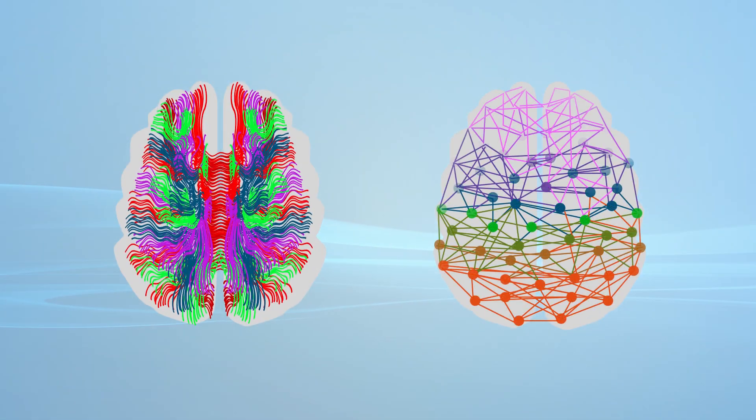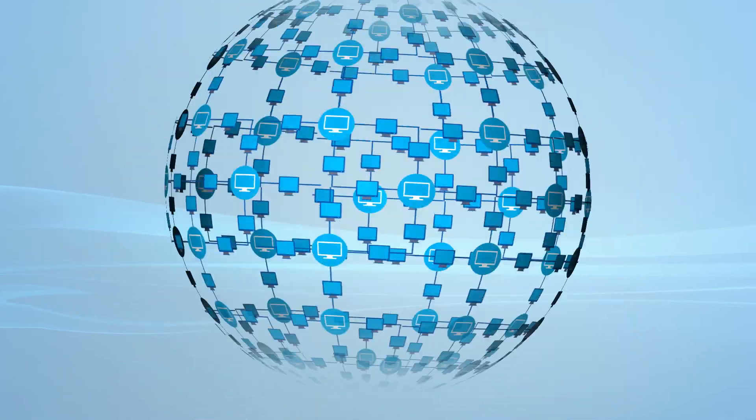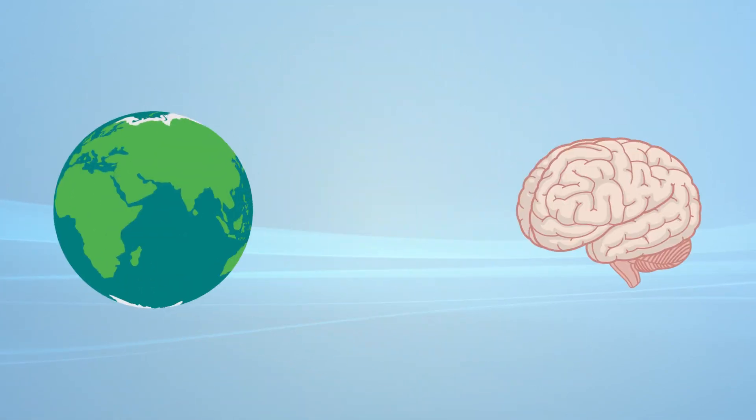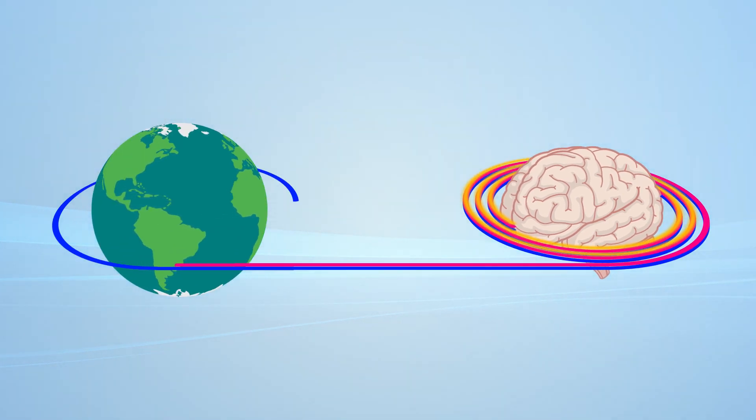The brain is like 100 billion tiny computers, brain cells or neurons, each connected to thousands of others. These connections would stretch four times around the earth.